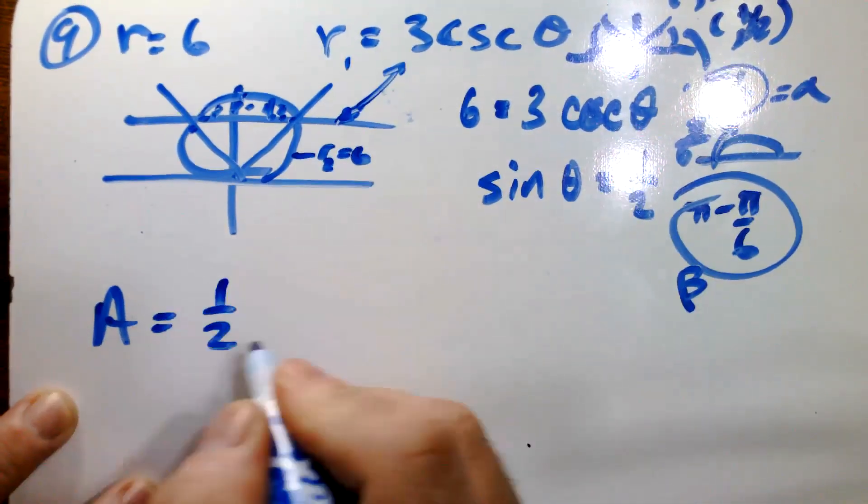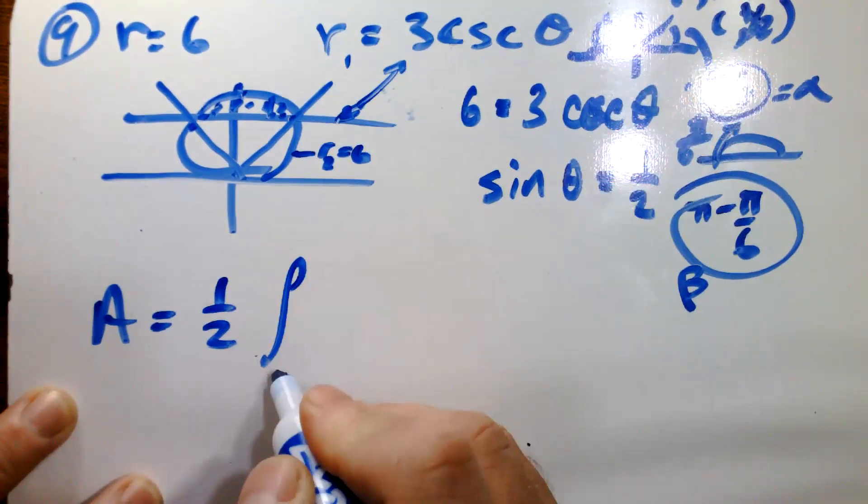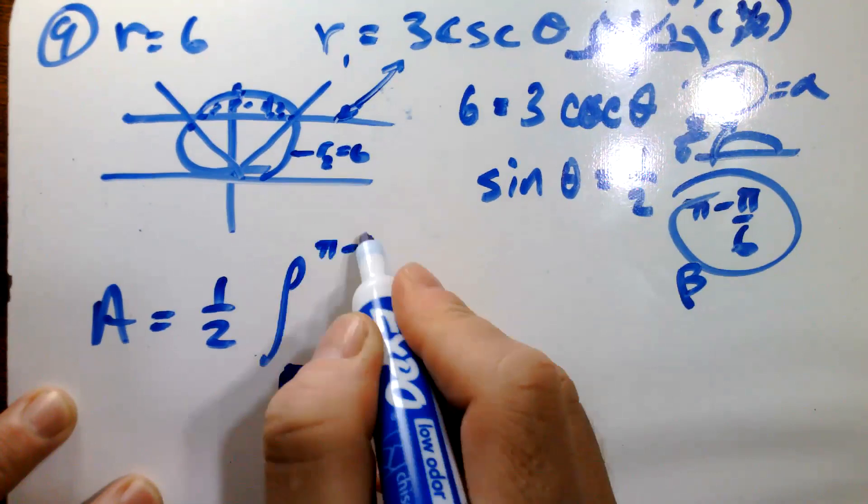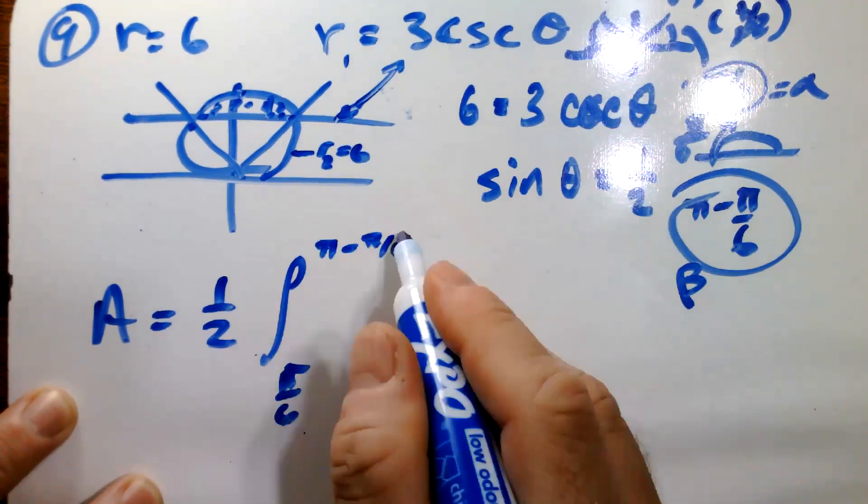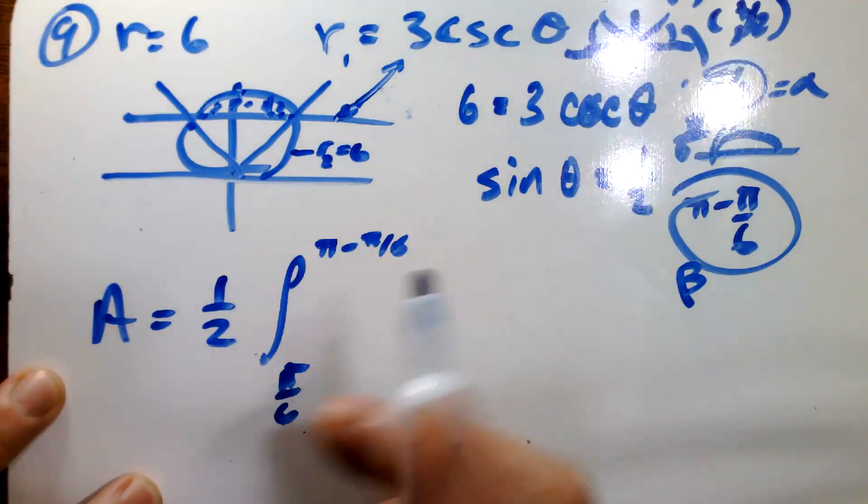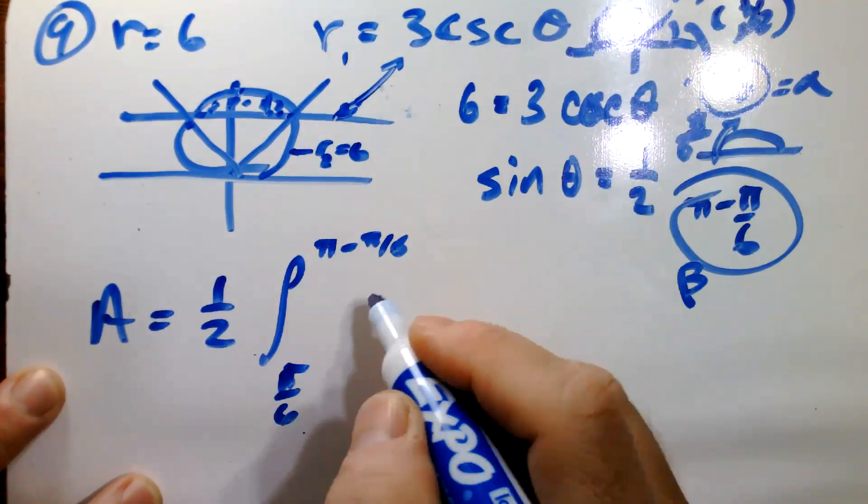So then A is equal to 0.5 times the integral from alpha to beta, so pi over six to pi minus pi over six. That's not pi over six in case you're wondering, but I like to write it in that constructive form. I think it helps me to understand where it's coming from or why it's that.